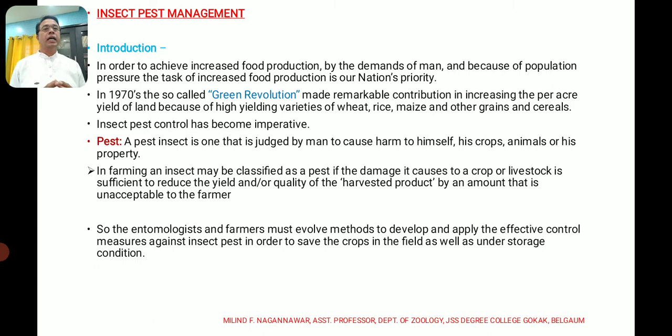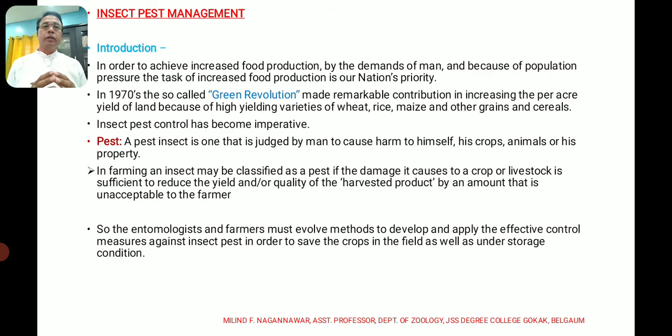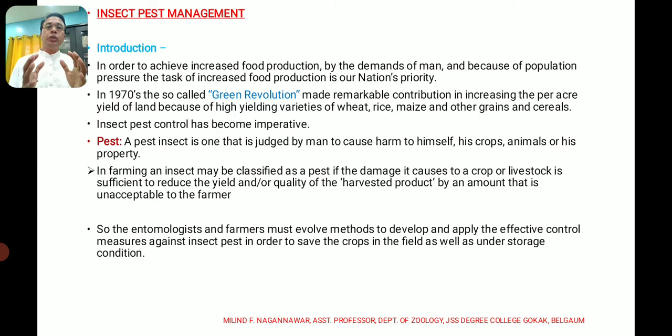The green revolution introduced high-yielding varieties of wheat, rice, maize, and other grains and cereals. Because of this, storage facilities also increased. With this increase in agricultural development, pests have also increased, and there is now a need for proper management to control insect pests — their growth as well as their population must be checked.